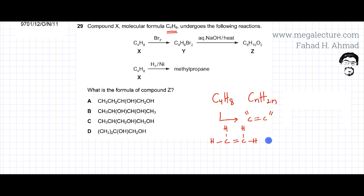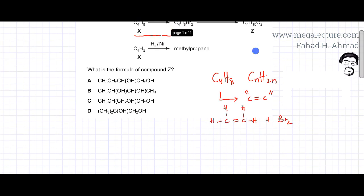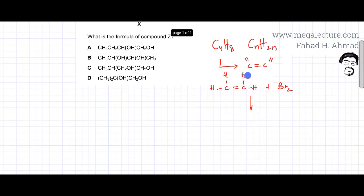You're going to react it with Br2. That's the first reaction that we are studying, the conversion from X to Y. Now what happens in this reaction is that the double bond gets converted into a single bond. So C=C gets converted into C single bond C.